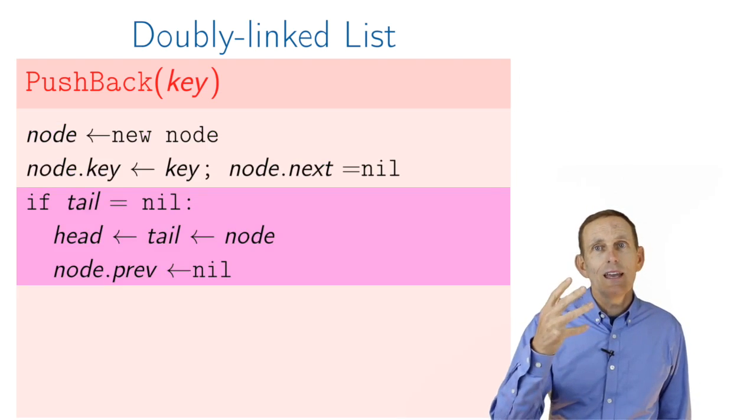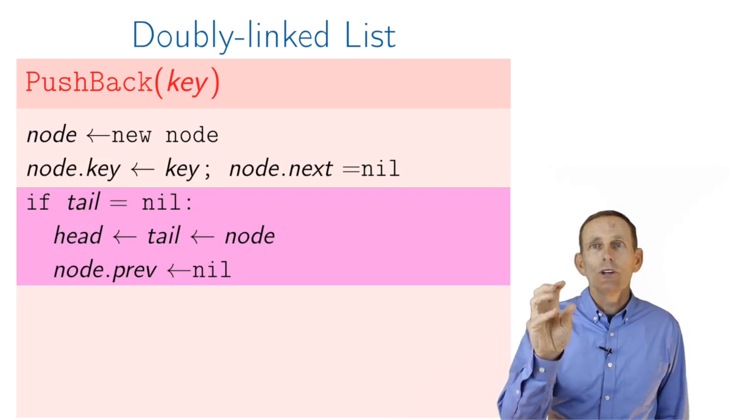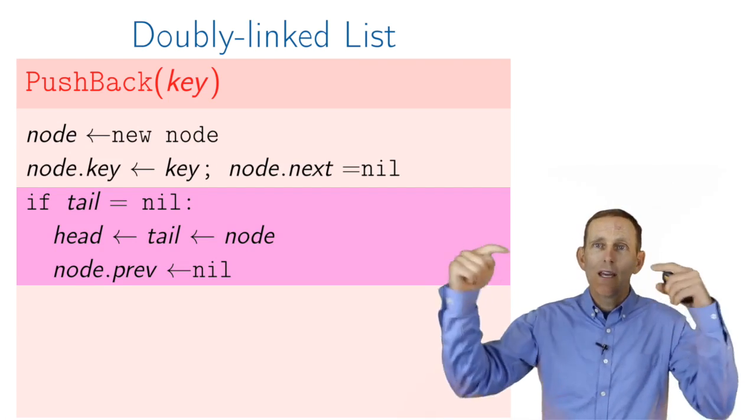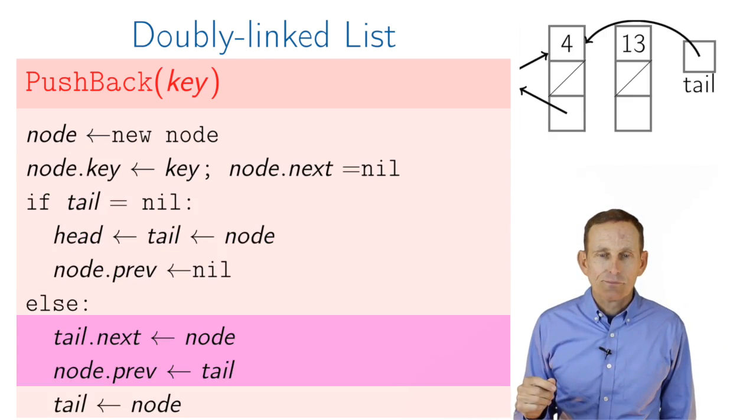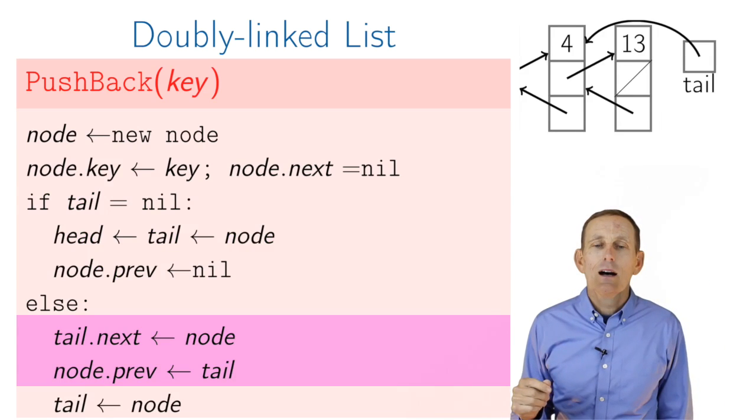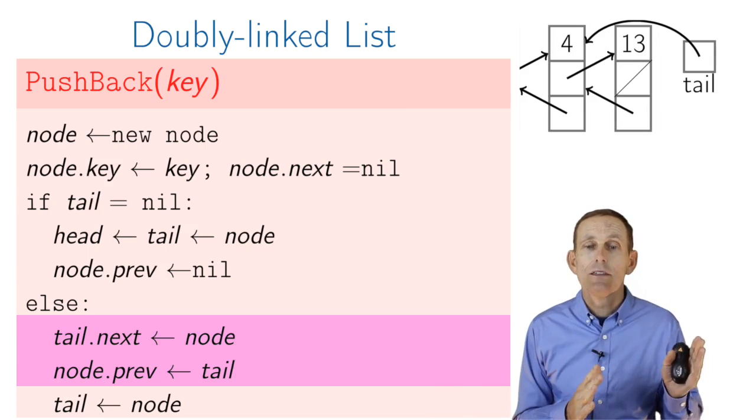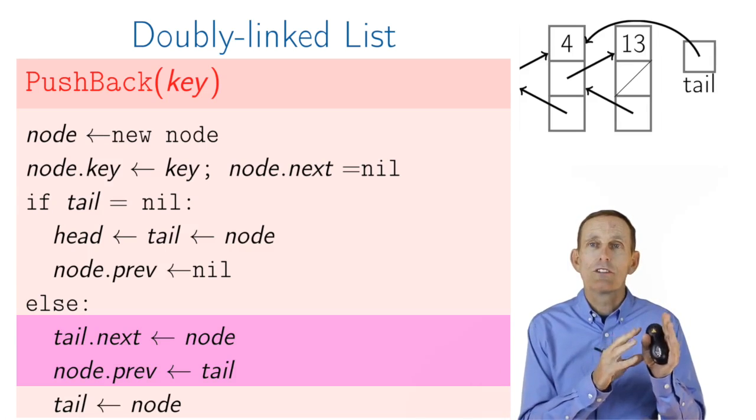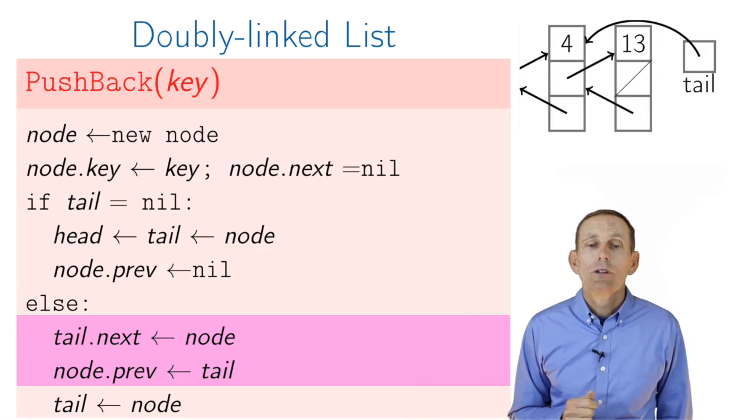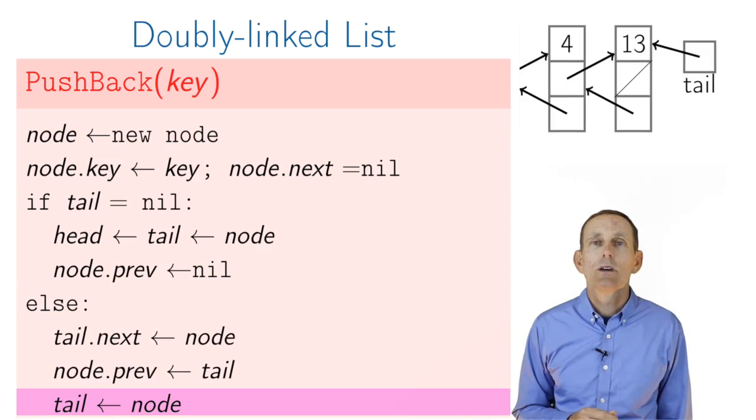then we just have a single node whose prev and next pointers are both nil, and the head and tail both point to it. Otherwise, we need to update the tail's next pointer to this new node, because we're pushing at the end, and then go update the prev pointer of this new node to point to the old tail, and then finally update the tail to this new node.